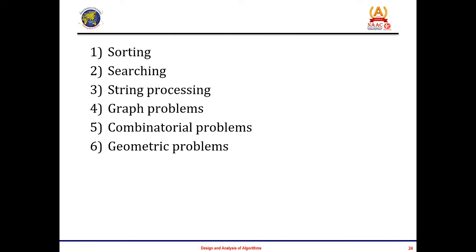The second-to-last problem type is geometric problems. These algorithms deal with geometric objects such as points, lines, and polygons. Earlier, the interest was in constructing simple geometric shapes like triangles, circles, and squares. But people have migrated, and now geometric algorithms are applied with quite different applications in mind — specifically in computer graphics, robotics, and tomography. Geometric problems play a vital role in these types of applications in computer science.